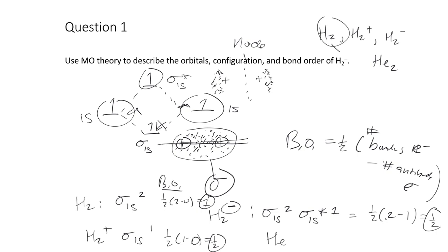For He2, we add a second electron into the sigma* 1s, giving the configuration sigma 1s², sigma* 1s². The bond order is ½(2−2) = 0. So He2 is not going to exist as a stable molecule because there is no net bond.